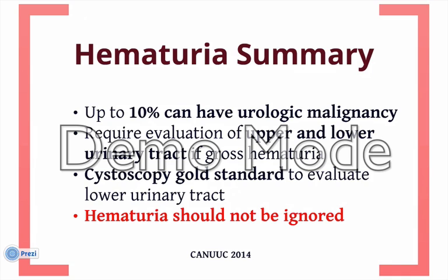To summarize, hematuria is a significant urologic condition. When blood in the urine is identified, 10% of patients can have urologic malignancy. Typically, people with gross hematuria require an evaluation of their entire urinary tract, as do people with microscopic hematuria over the age of 40. Investigation of the upper urinary tract is performed by radiographic studies — in most cases a well-performed renal ultrasound — while the lower urinary tract does require cystoscopic assessment to rule out intravesical pathology. Hematuria, when present, should not be ignored.